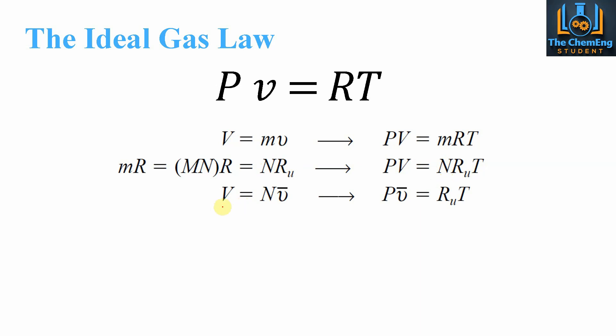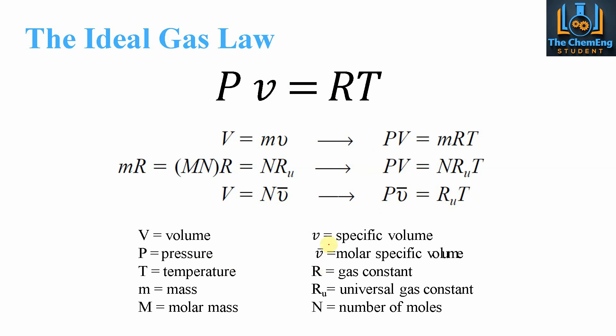One that is not so common is V equals the number of moles multiplied by the average specific volume of the material. Now what we would do is replace the V here with N and V bar, and then the N's would cancel, so we're left with PV bar equals the universal gas constant multiplied by the temperature. So depending on the information that we have, we can use and manipulate this equation to suit our system. You can take a look at these and see if you can derive these equations by yourself. If you have problems, you can always refer back to this slide for some help.